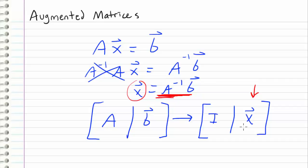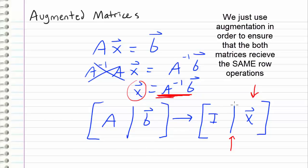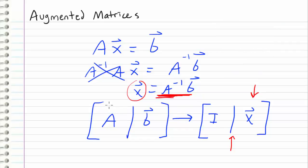So hopefully this clears up some discomfort with using this augmentation bar. It's really nothing to be intimidated by, because what we do is simply treat it as a giant matrix — in fact, we can pretend this bar isn't even here. As long as you apply your row operations across both the left and right-hand side of this bar, everything should be fine. Anyway, thanks for watching, and I will see you guys in the next video.